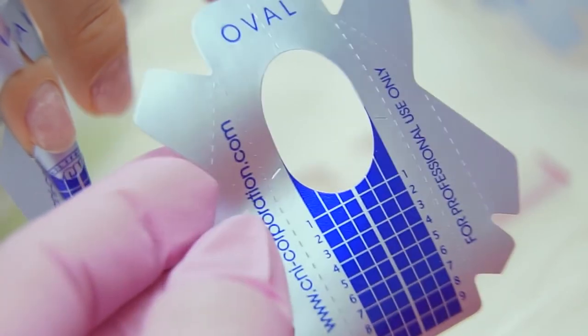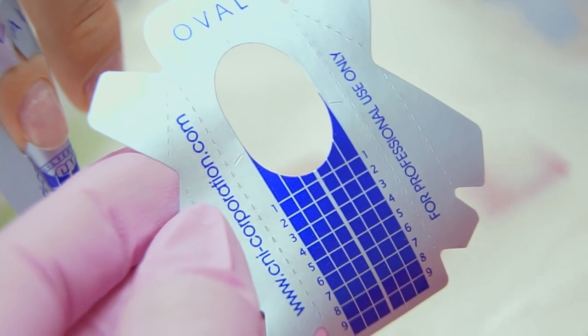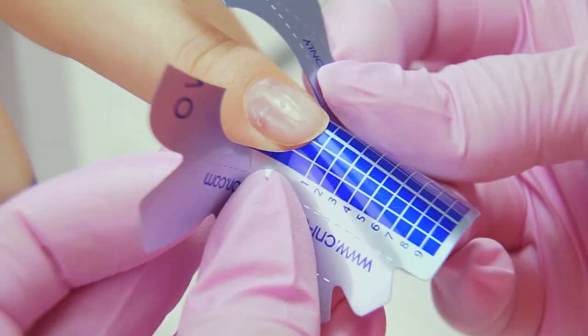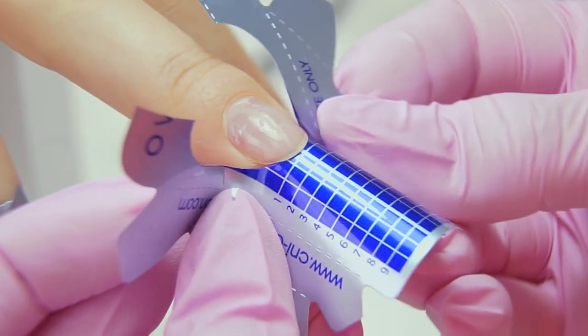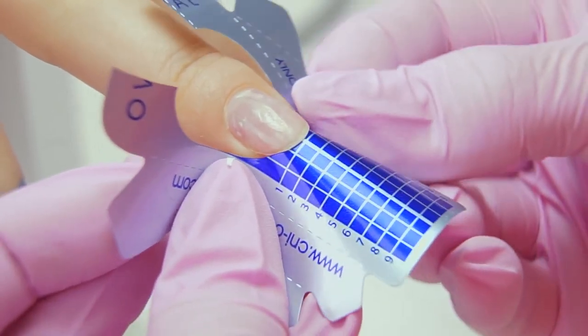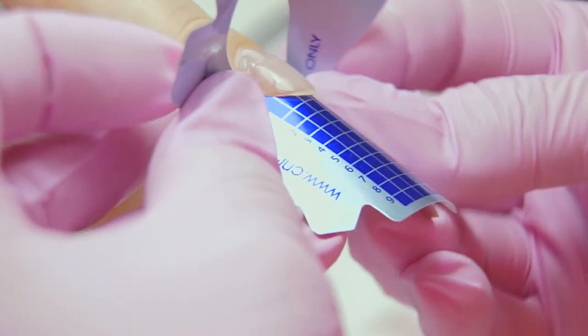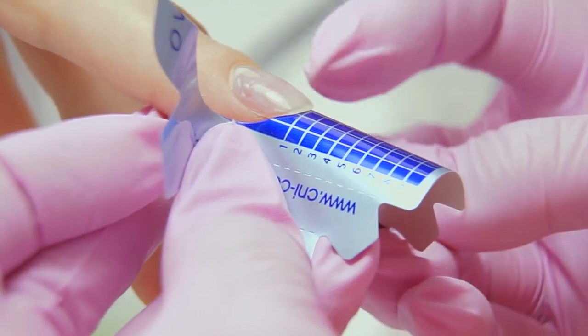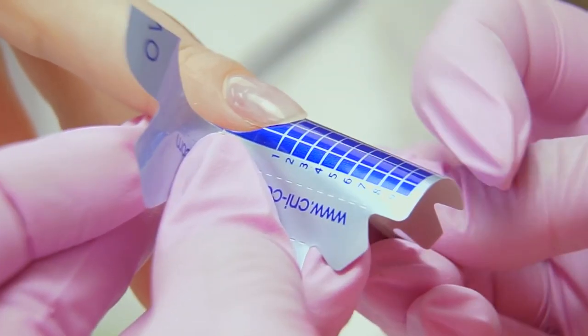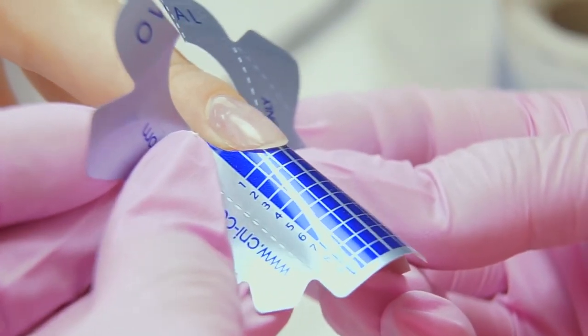Now let's try out the form without a special gap. I twist the form and place it under the nail. Look, if I leave it as it is, the form will be too high. So I need to tilt the form down a little bit.